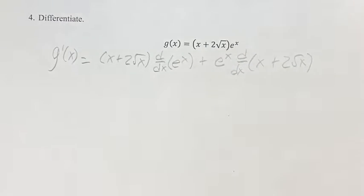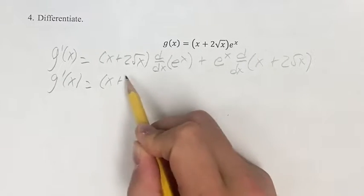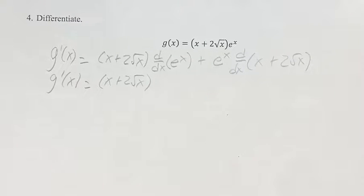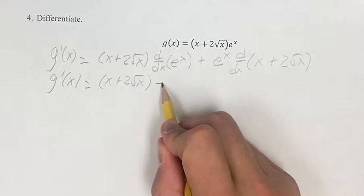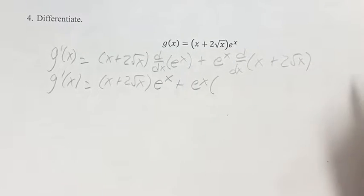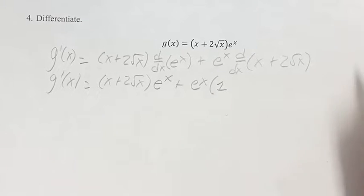Now, actually calculating what these derivatives are, we get x plus 2 times the square root of x, times the derivative of e to the x. The derivative of e to the x is just e to the x, plus e to the x times the derivative of a linear term, so that means the derivative is just the coefficient, so 1.